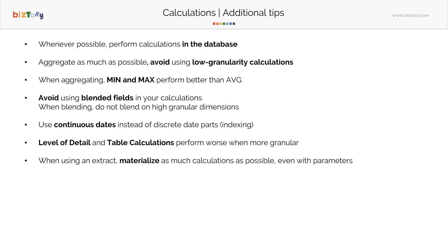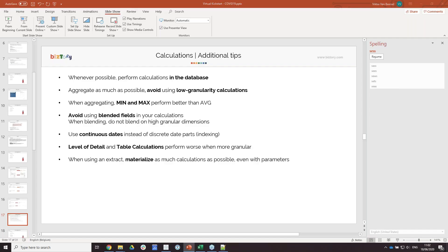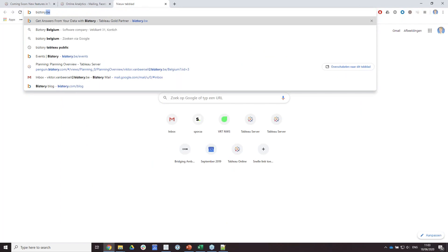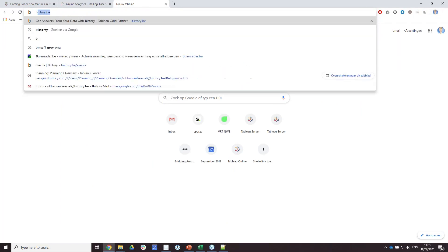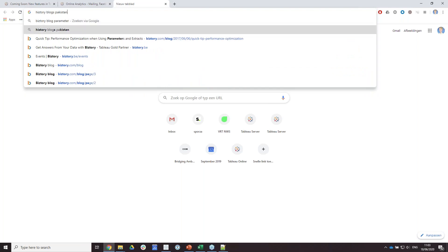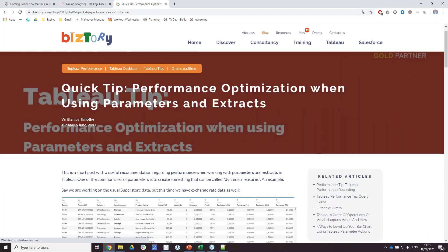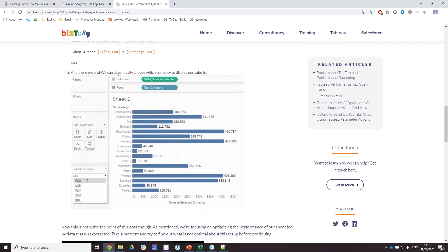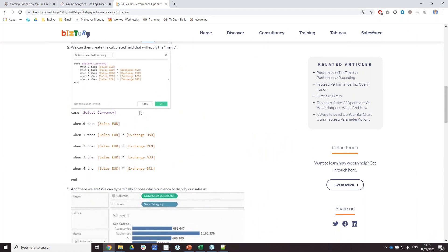Similar to what we discussed before, when you're using an extract, materialize as many calculations as possible, even with parameters. I am referring to a blog post that was written by one of our other consultants. This is a very quick read, not going to go too much into detail, but you can add some tricks in order to materialize your calculations. So this would be as-is: you have one calculation where you basically use a parameter to convert your sales to a certain other currency.